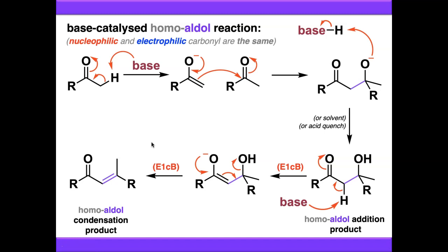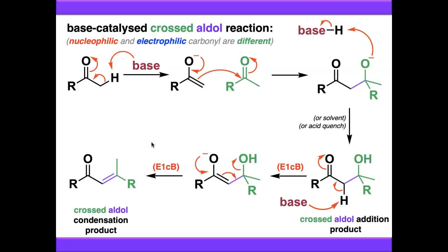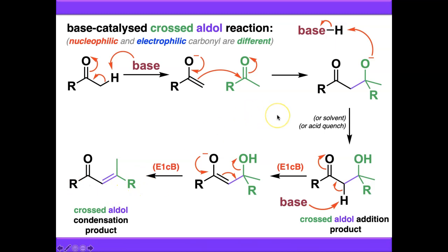We don't have to do aldol reactions where both components are the same. By controlling the order of addition or the reagents and substrates we use, we can get what we call crossed aldol reactions — where we specifically enolise one carbonyl compound and get it to react with a different carbonyl compound, giving a crossed aldol addition product and a crossed aldol condensation product. Crossed aldol reactions are much more synthetically versatile than homoaldol reactions because you're not limited to having the same functional groups on both sides of the molecule, allowing you to form more complex molecules. We'll discuss the ways to control which enolate forms in session.